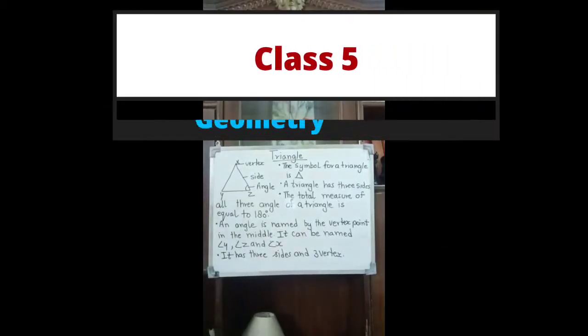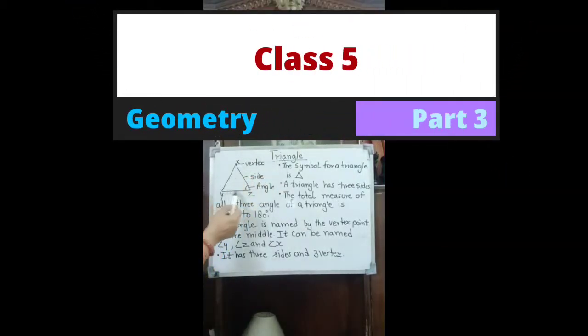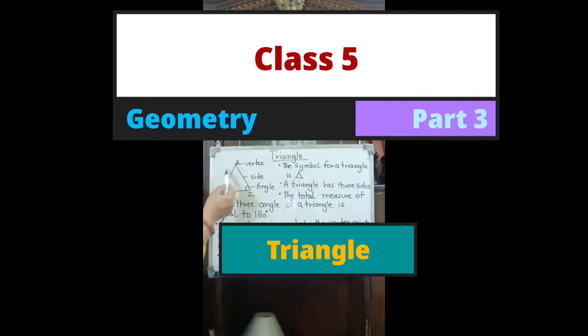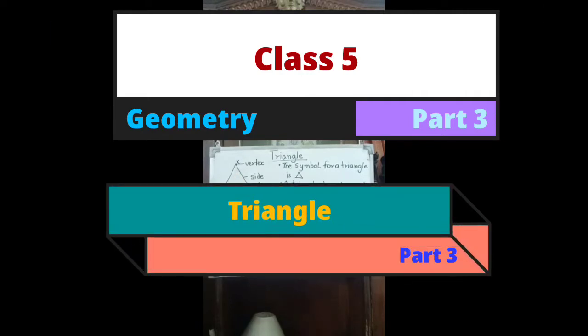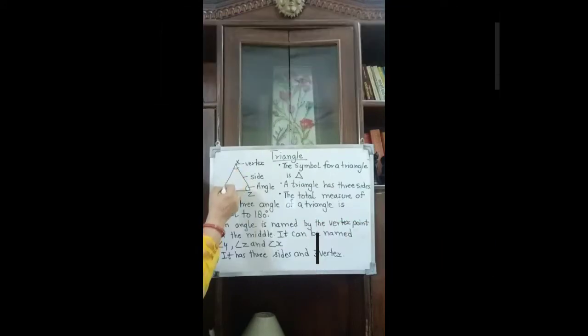Now, children, this is a triangle. Triangle means three sides and three corners. When three sides join together and make three corners, this is called a triangle.